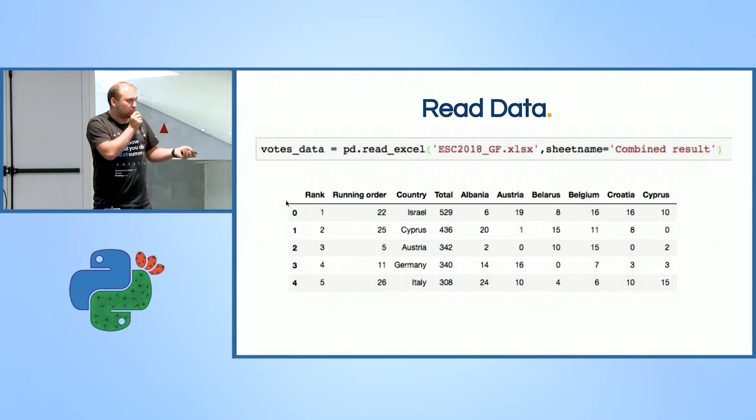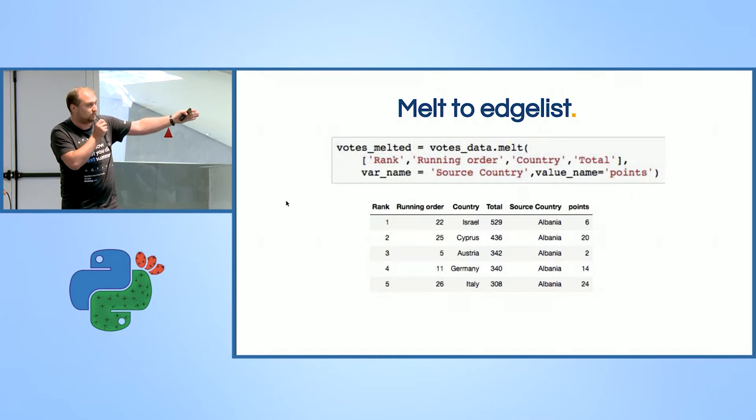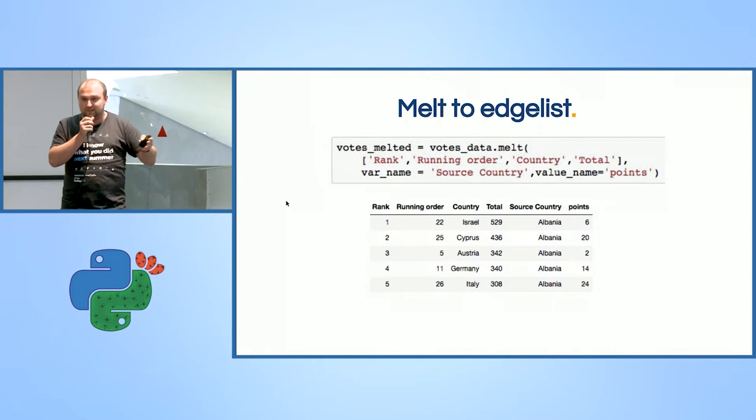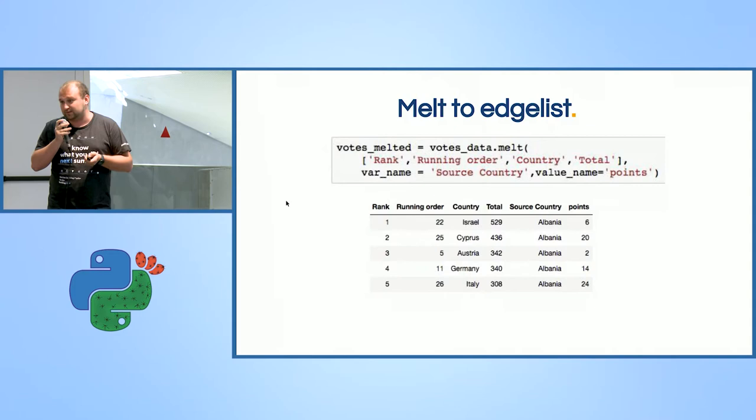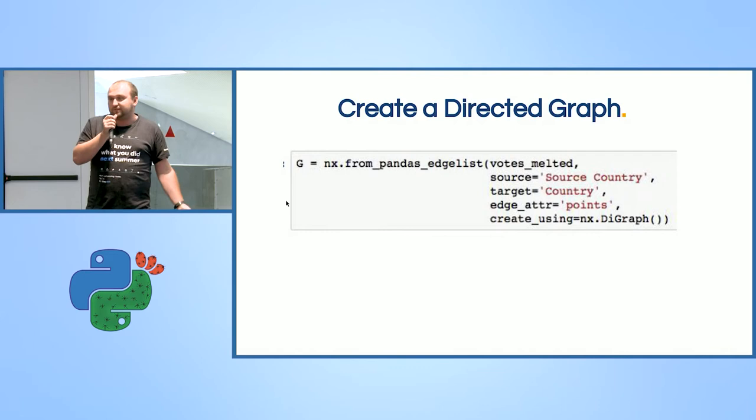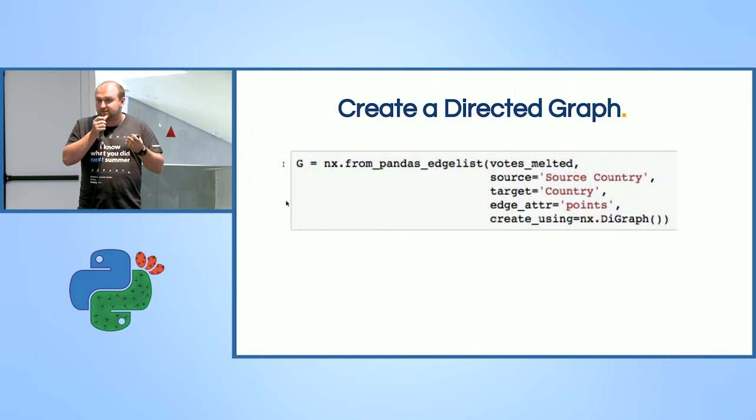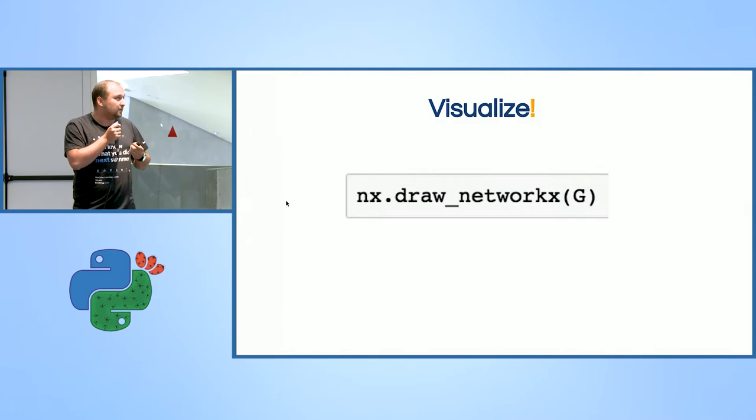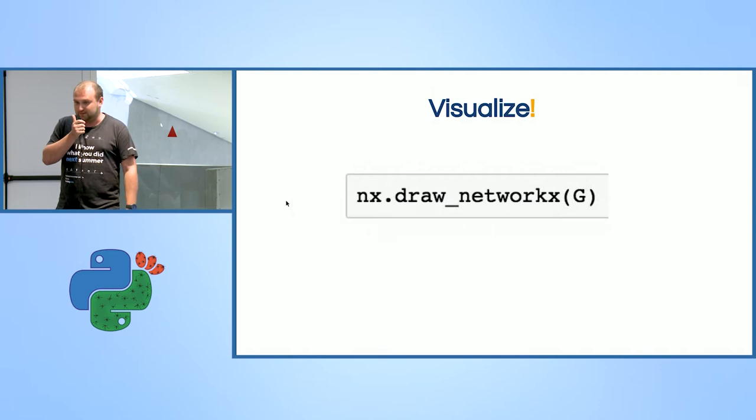We need to convert this into the data that we can feed to the network. So what I want to do is to create an edge list, a list of connections between one country to another country. So all I do is just a melt transformation on this data. And I create country, receiving country Israel, source country Albania, and number of points that Albania gave to Israel. And then I just input this to my NetworkX package. As I defined, source input is going to get source country, target will get target country. The weight that I'm going to give to my network is the number of points, because obviously it has some information there. And also know that it's going to be a directed network because the connections are not symmetric in this case. Amazing, I already have a network.